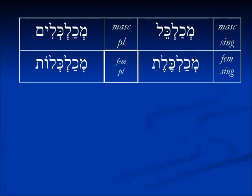If you're comparing in your mind the participle tense of the verb to speak, lidaber — the participle is going to be midaber, midaberit, midabrim, midaberit — here we have the extra consonant inserted, but the vowels are very similar.